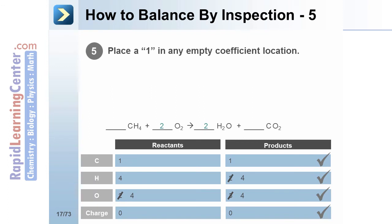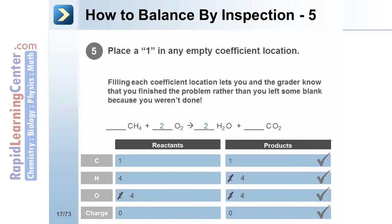When each element and the charge are balanced, place a 1 in each empty coefficient location. It's not required by some instructors, but that way you'll know that you finished the problem and not that you left it blank because you weren't sure of how to complete the problem.